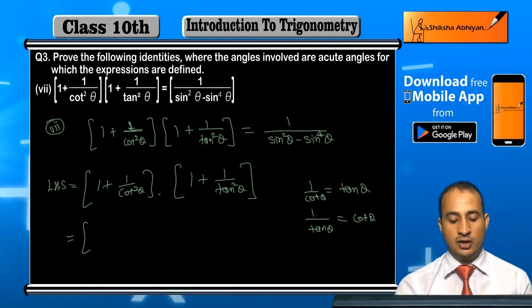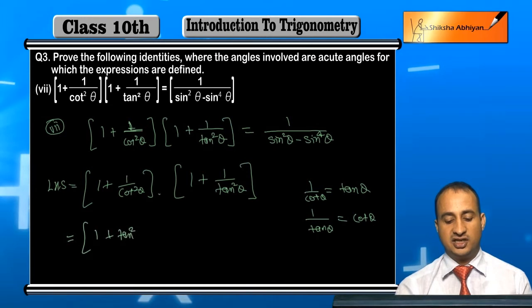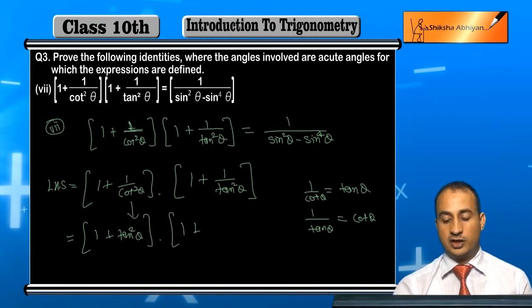So 1 upon cot²θ becomes tan²θ reciprocal. And in the next bracket, (1 + 1/tan²θ),